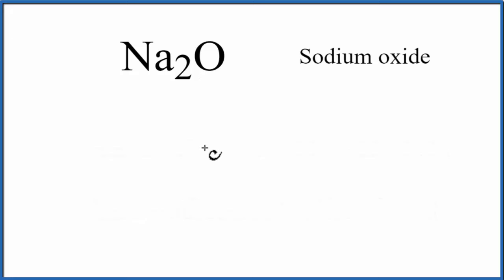So let's first draw Na, and if we look on the periodic table, Na is in group 1, and that means that it has one valence electron. We'll put that right here.